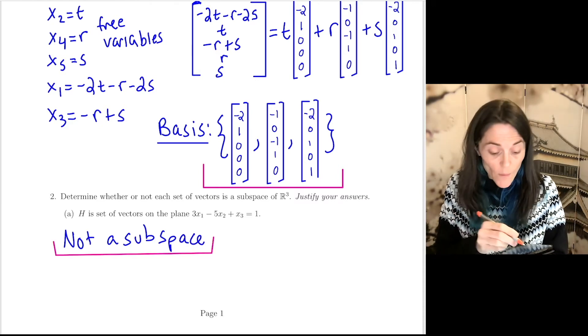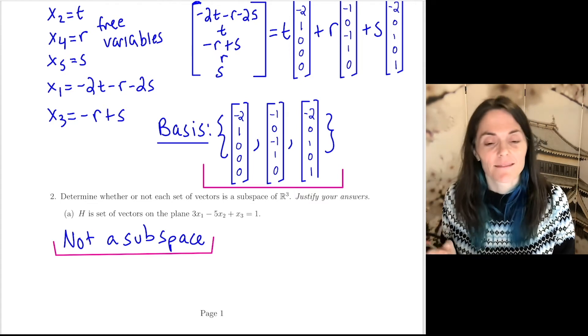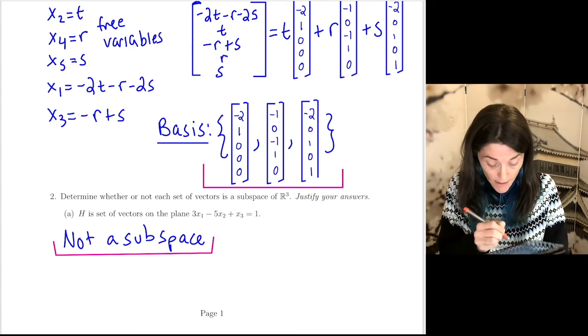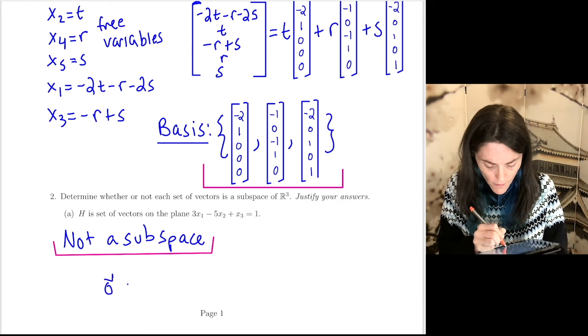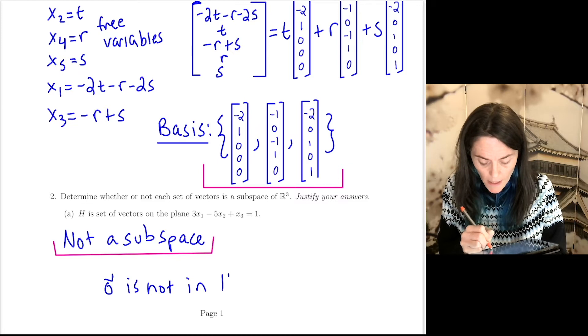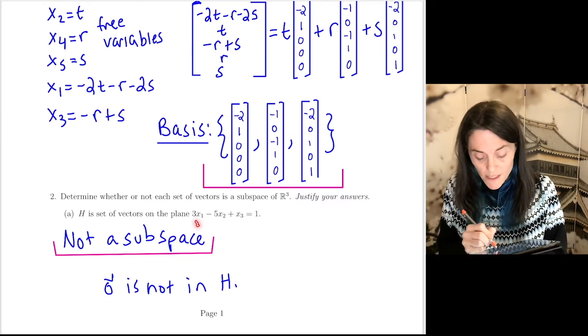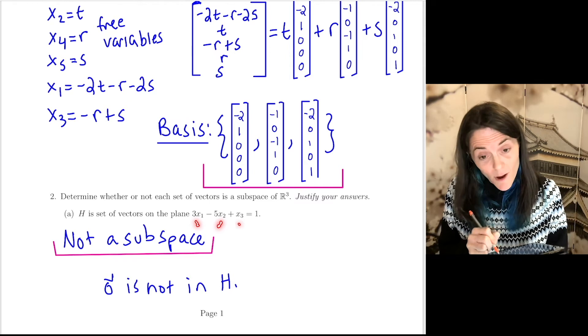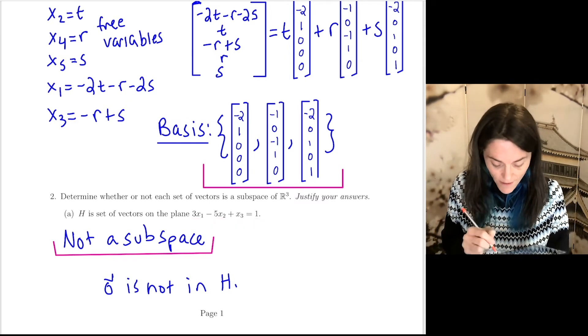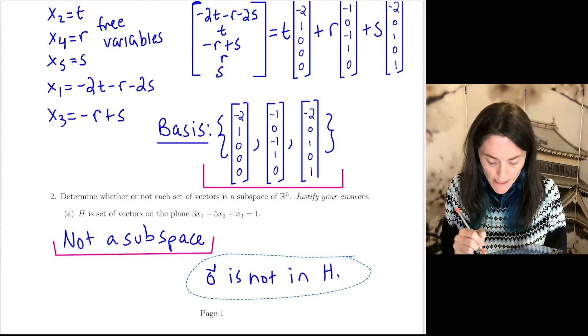The easiest one to realize here is that 0 is not on this plane. So 0 is not an element of H because 3 times 0 minus 5 times 0 plus 0 is 0, not 1. So 0 is not in this plane. It's not a subspace.